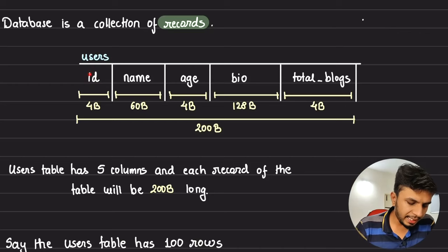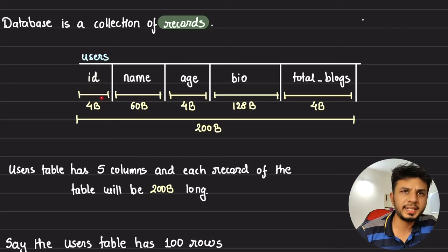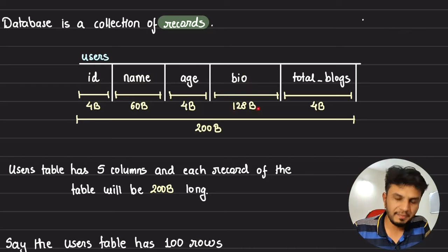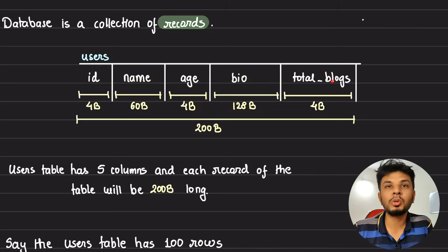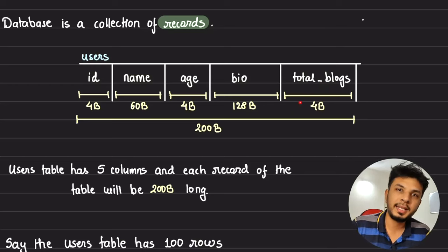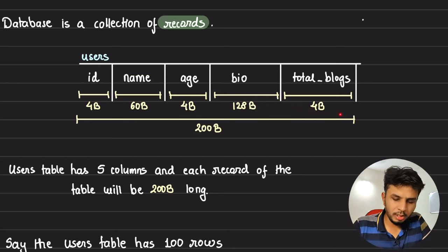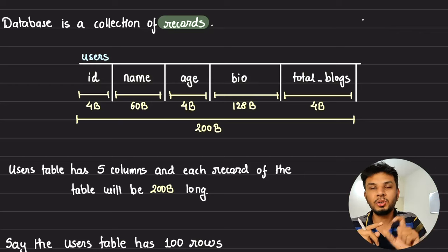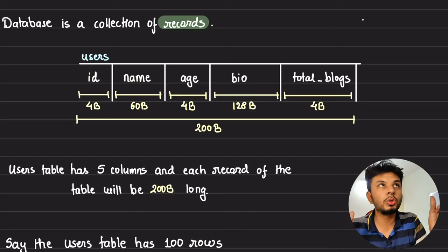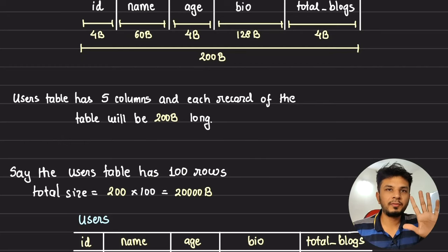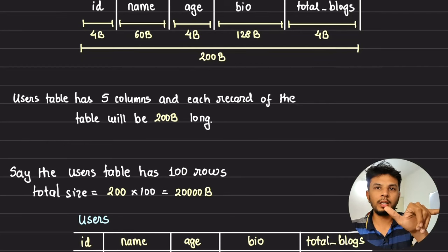ID being an integer takes up 4 bytes. Name is 60 bytes. Age, again an integer, is 4 bytes. Bio could be a big one — let's say 128 bytes. Total number of blocks, as in how many blocks a user has published, is an integer so 4 bytes. In all, storing one row onto the disk would take up 200 bytes.